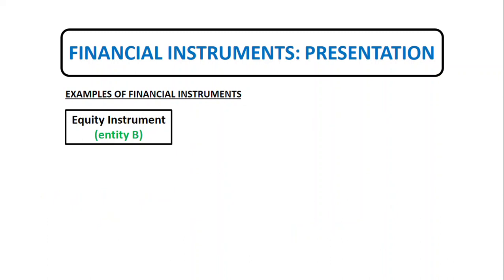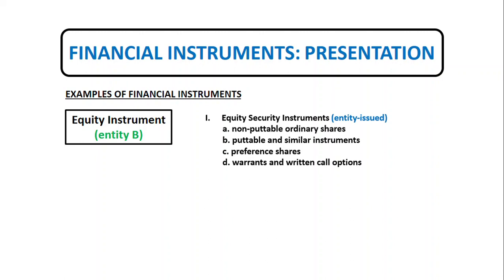For equity instruments, we have non-puttable ordinary shares — also called common shares — which are non-puttable because there is no maturity date. Puttable and similar instruments include redeemable preference shares, which have a maturity date, as well as normal preference shares. We also have warrants and bid and call options. Under IAS 32, an equity instrument is an instrument that includes no contractual obligation either to deliver cash or another financial asset to another entity, or to exchange financial assets or financial liabilities under conditions that are potentially unfavorable to the issuer.